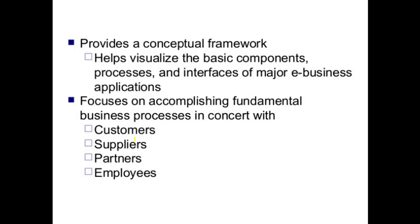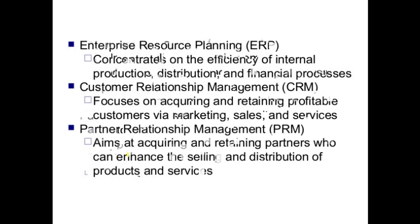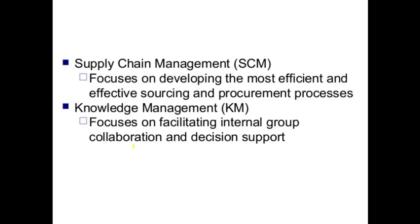The EA architecture works with customers, suppliers, partners and employees. ERP concentrates on the efficiency of internal production, distribution and financial processes. CRM focuses on acquiring and retaining profitable customers via marketing, sales and services. Partner relationship management (PRM) aims at acquiring and retaining partners who can enhance the selling and distribution of products and services. Supply chain management focuses on developing the most efficient and effective sourcing and procurement processes. Knowledge management (KM) focuses on facilitating internal group collaboration and decision support.